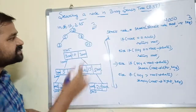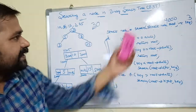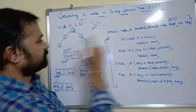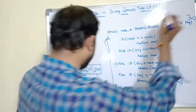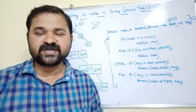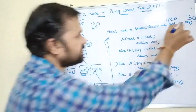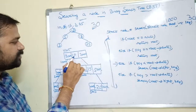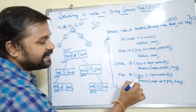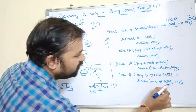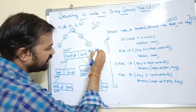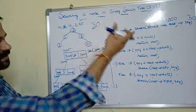Now let's try key = 30. Search is called with root = 1000. Is 1000 == null? False. Is 30 == 10? False. Is 30 < 10? False. Is 30 > 10? True. So we call search(root->right, 30) = search(3000, 30). Now root = 3000. Is 3000 == null? False. Is 30 == 15? False. Is 30 < 15? False. Is 30 > 15? True. So we call search(5000, 30).